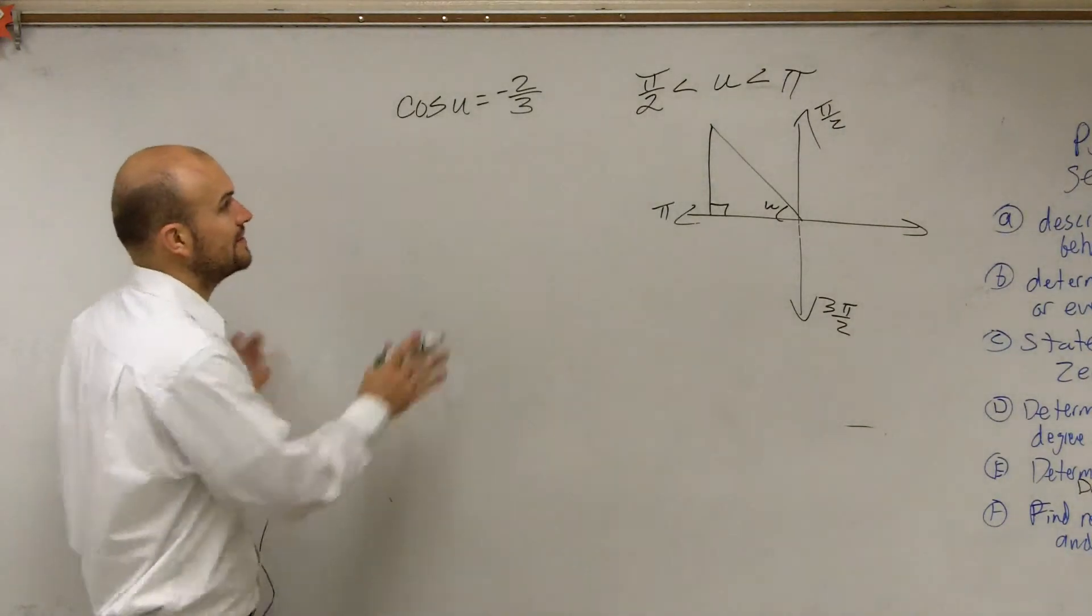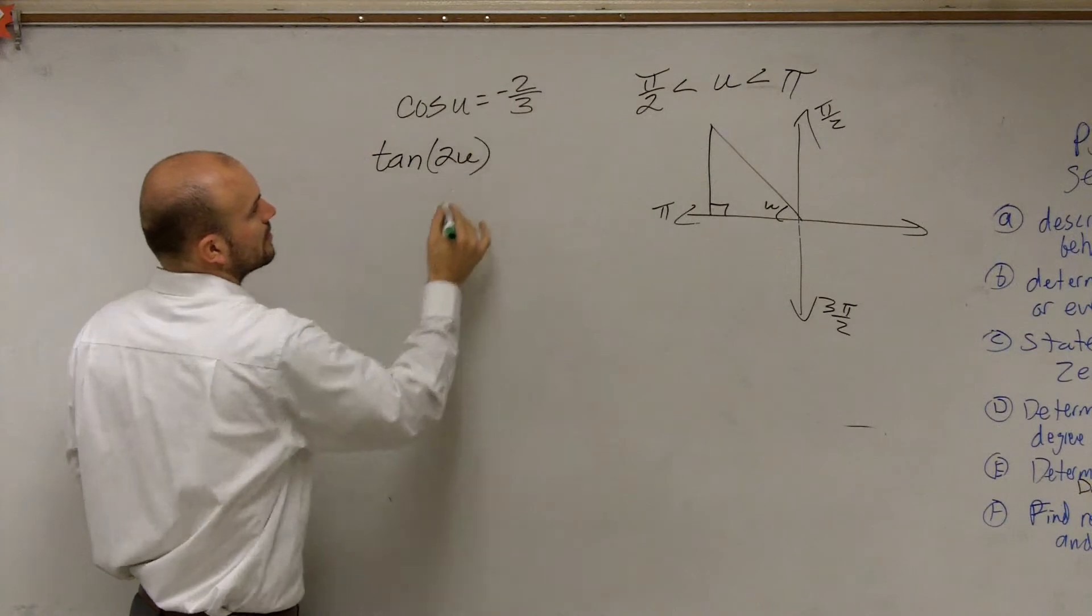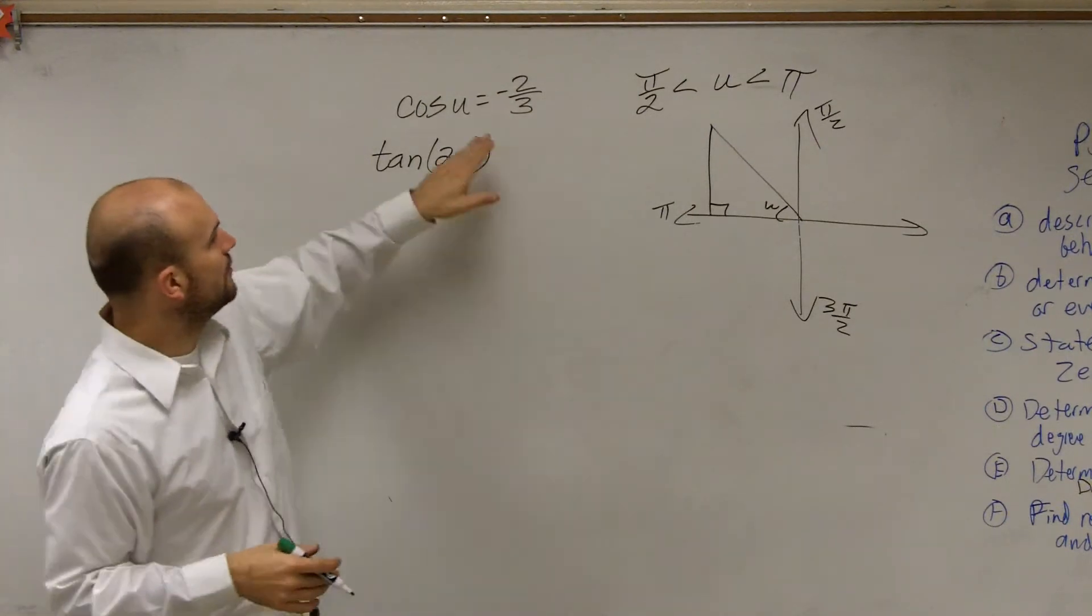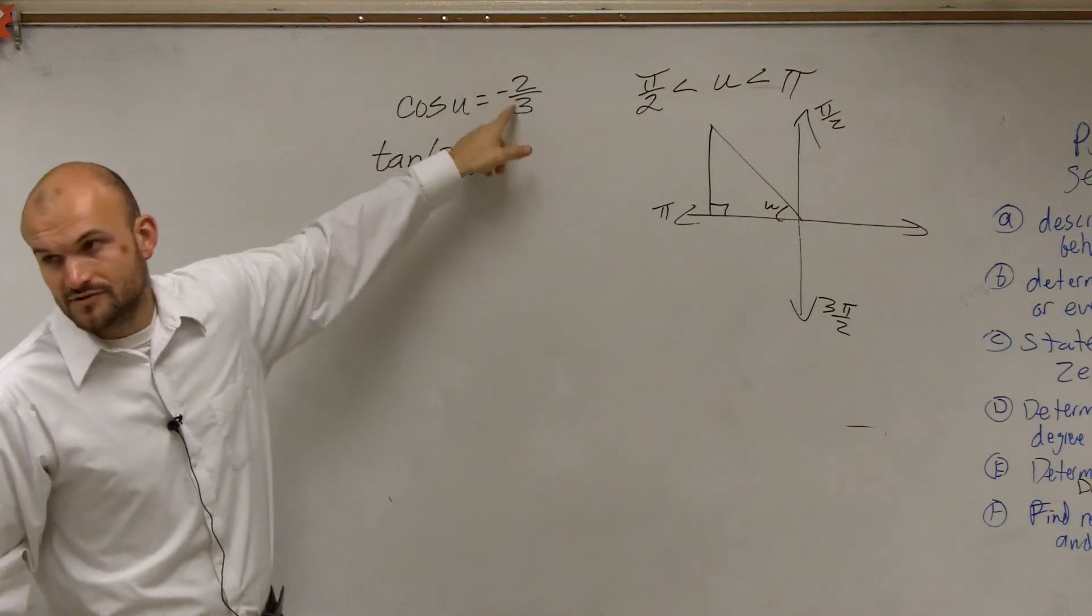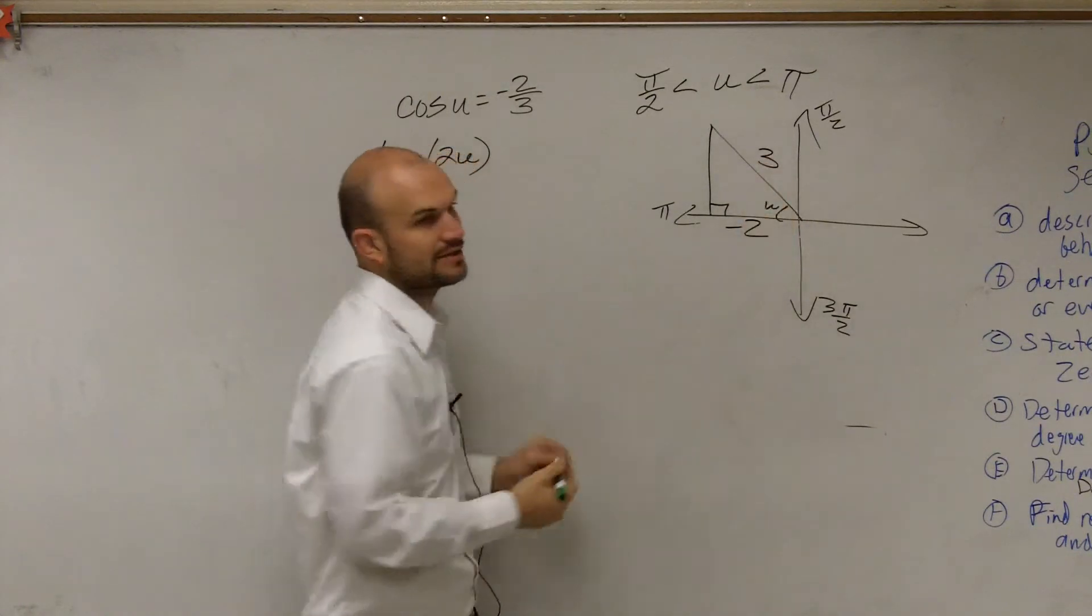So here's tangent. Now what I'm asking you to do is solve for the tangent of 2u. We know that cosine of u is -2/3, where this will be your adjacent and this is your hypotenuse.